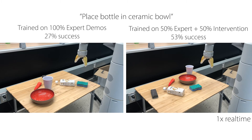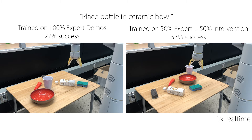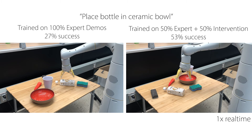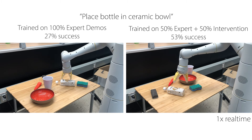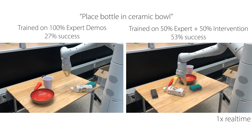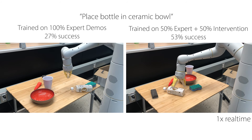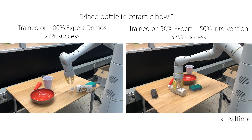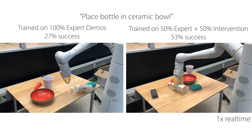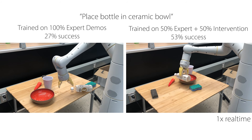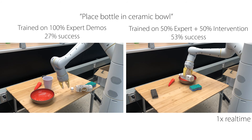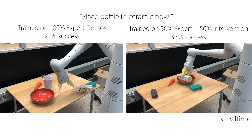We show the importance of various design decisions in featurization and training. One of our findings is that training on human intervention data improves overall performance compared to the same quantity of expert teleoperation data. Our framework allows imitation learning to learn long-horizon tasks like pick and place, and perform recovery behaviors from failure.